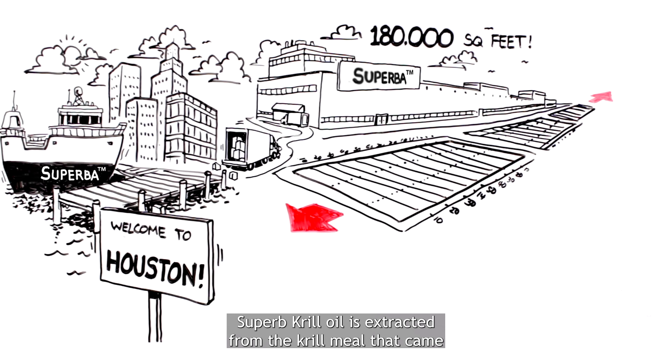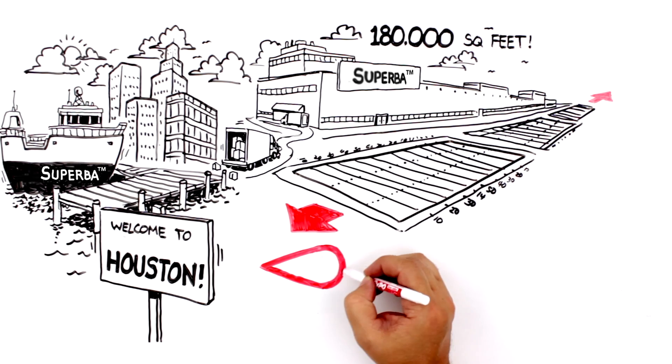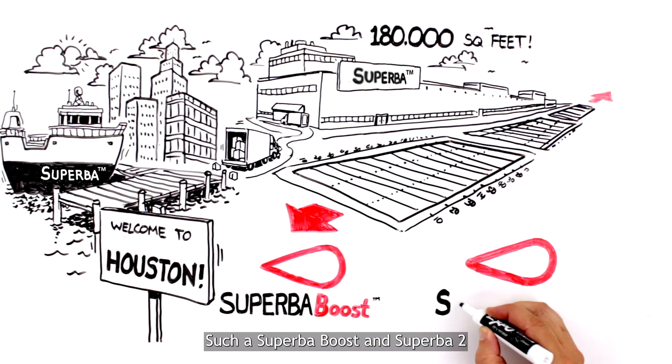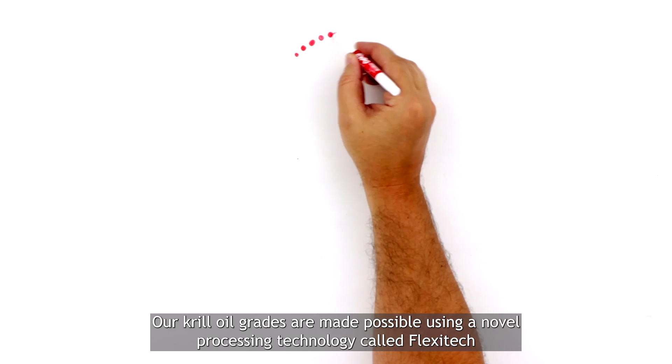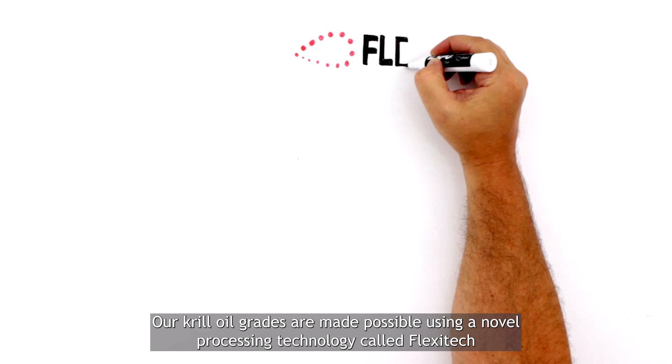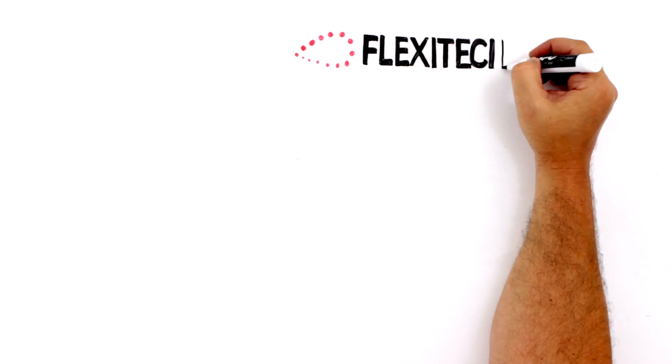Superba Krill Oil is extracted from the Krill Meal that came fresh off the boat and is processed into several different oil grades such as Superba Boost and Superba 2. Our Krill Oil grades are made possible using a novel processing technology called Flexitec, so named for its manufacturing flexibility.